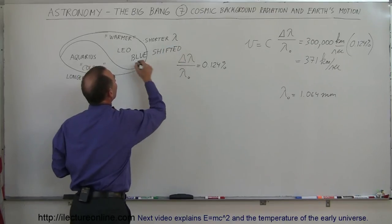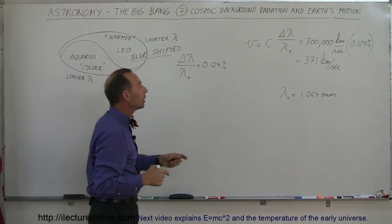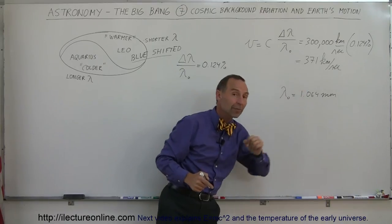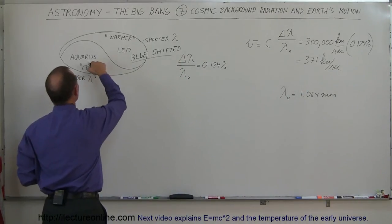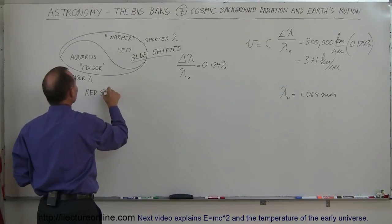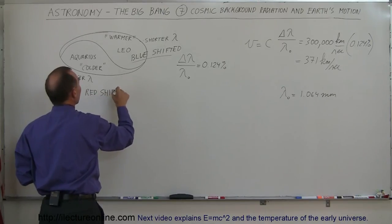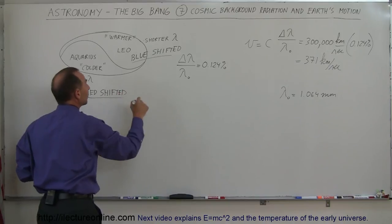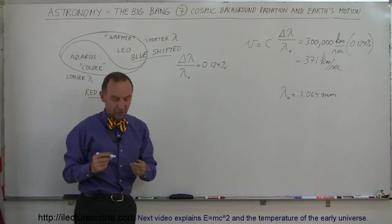And when we look at Aquarius, we are red shifted there. That means we're moving away from the constellation Aquarius at a speed of 371 kilometers per second.